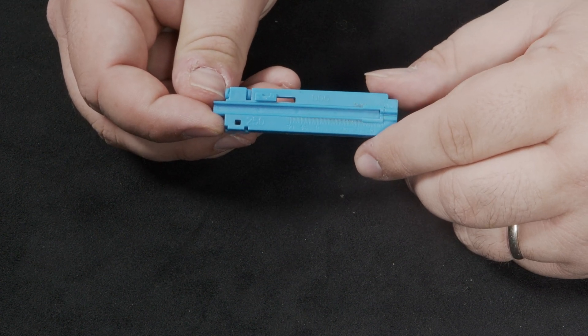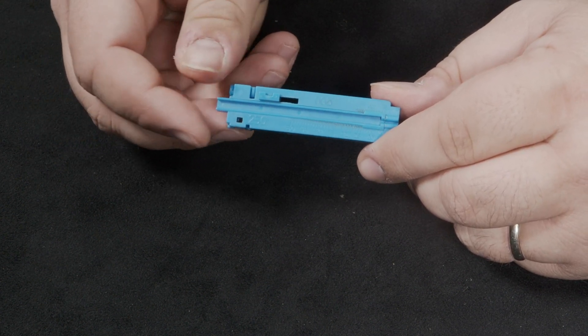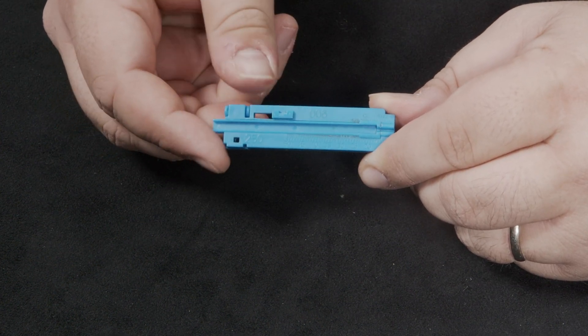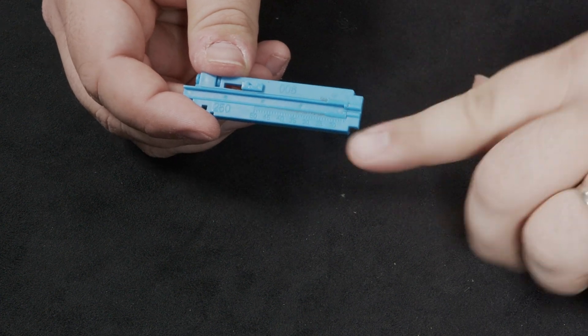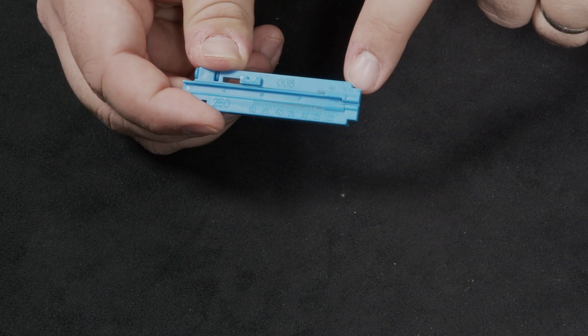The blue fiber cleaving guide has a sliding portion and a locking mechanism. There are measurements on the bottom which are not used for this instruction guide. We will however use the measurements along the top.